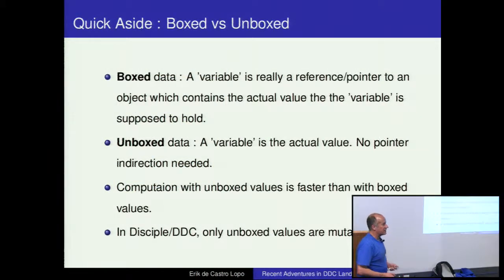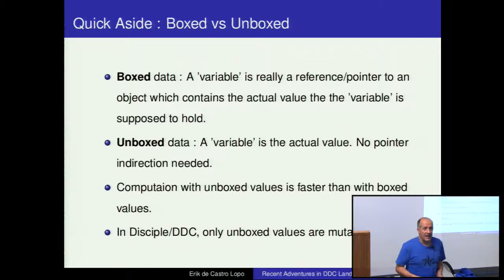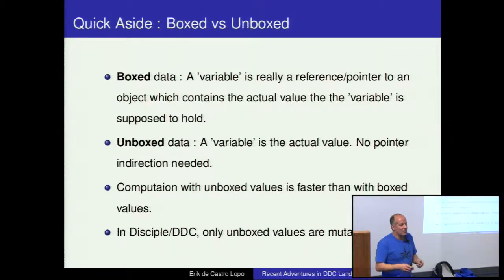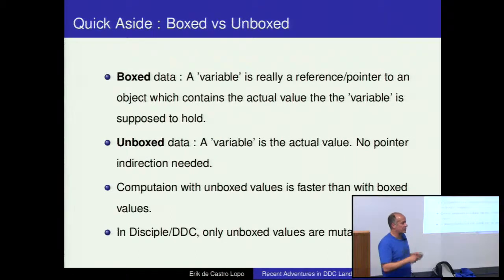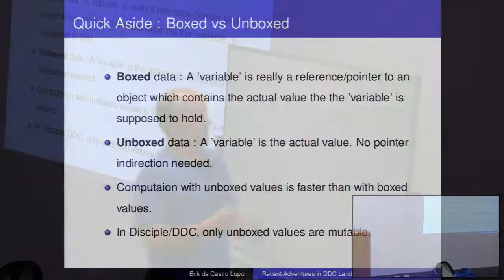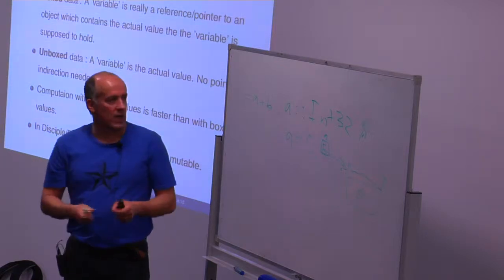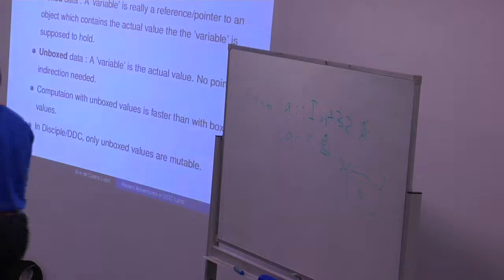Those who have seen things about Disciple and DDC before will realise that DDC has mutable data, unlike Haskell, and it's only the boxed values that are immutable. If it's boxed it will actually have a region variable in the inferred types, whereas for an unboxed value there will be no region variable.